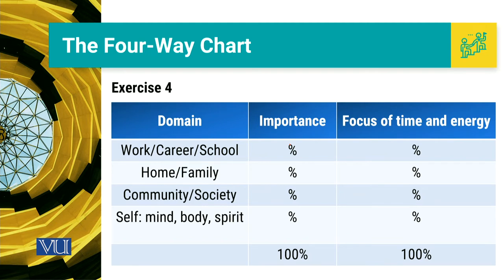For example, there is a possibility that I give importance to work something like 20% of my life. There is a possibility that I give weight to my family and home 40% of my whole time and life. There is a possibility that I give importance to community and society 20%, and I give 20% to myself as well related to my mind, body and spirit.